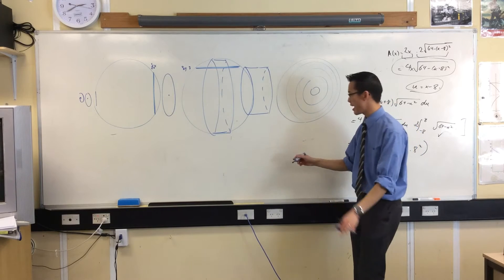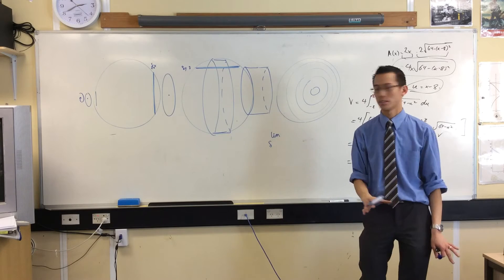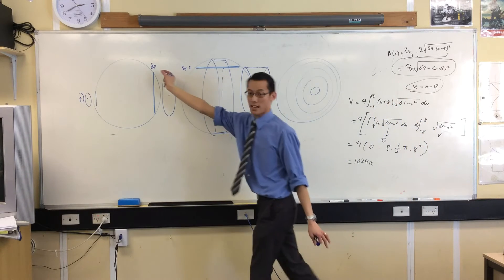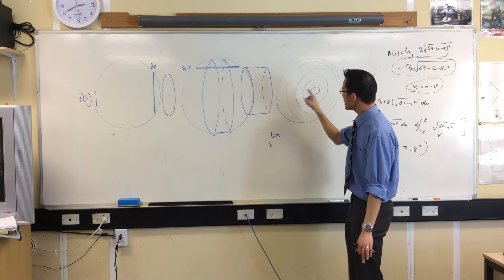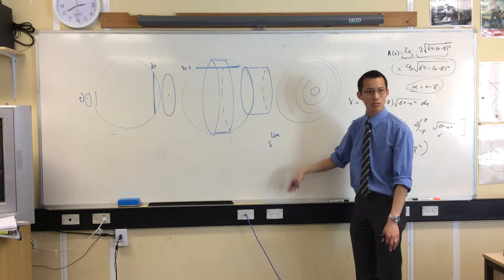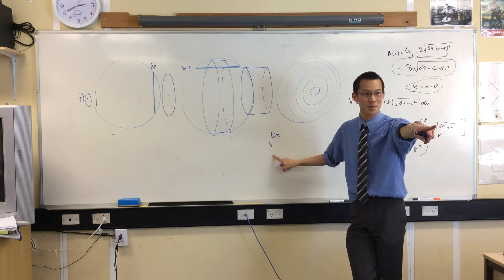So I could say, look, I want to take the limit as delta, now, hold on a second. Here you've got delta x, here you've got delta y, what is the width of one of these cylindrical shells in terms of, it's not x, and it's not y, it's in terms of radius.